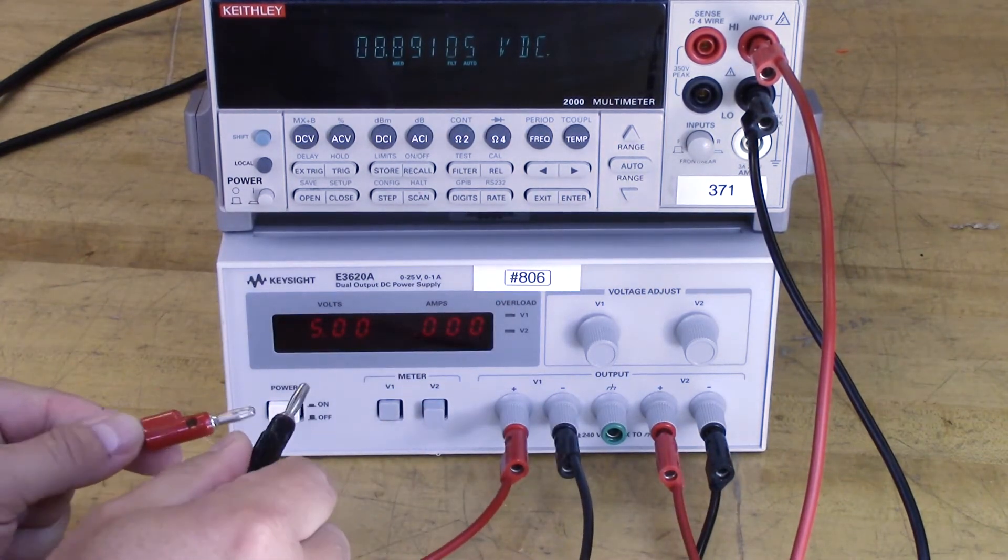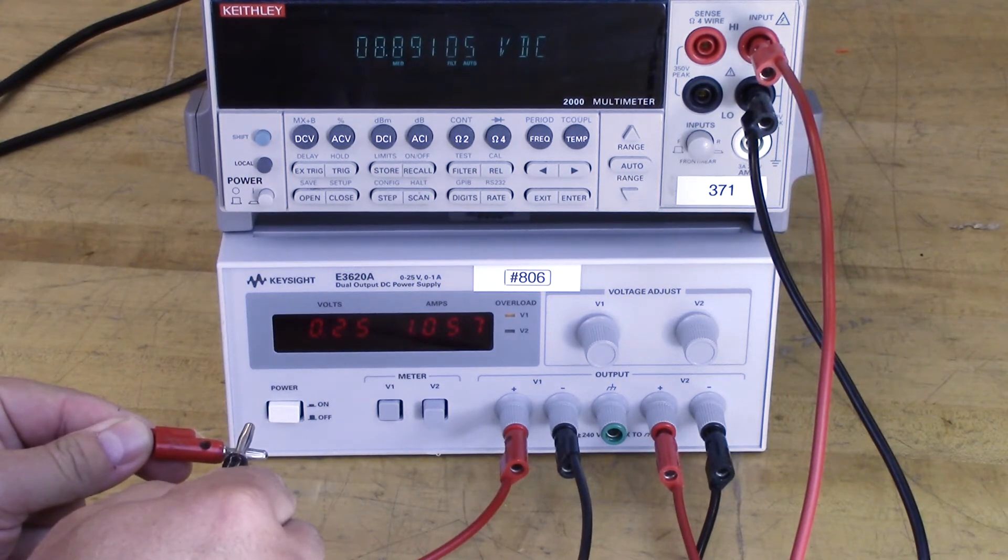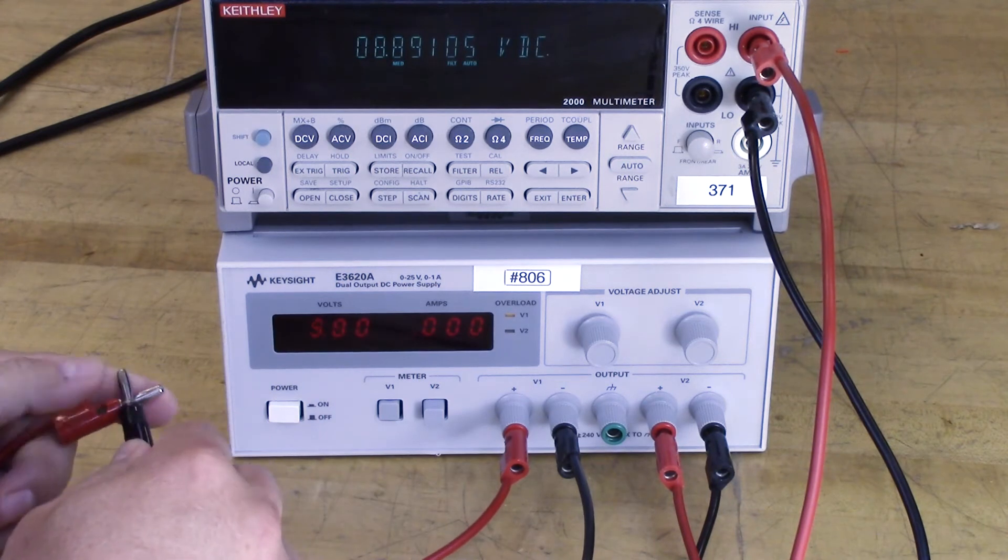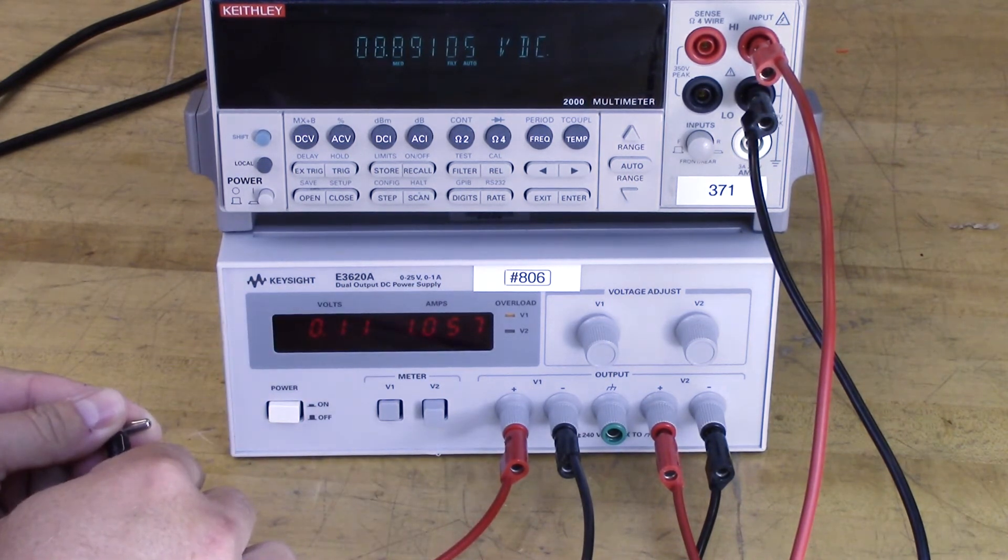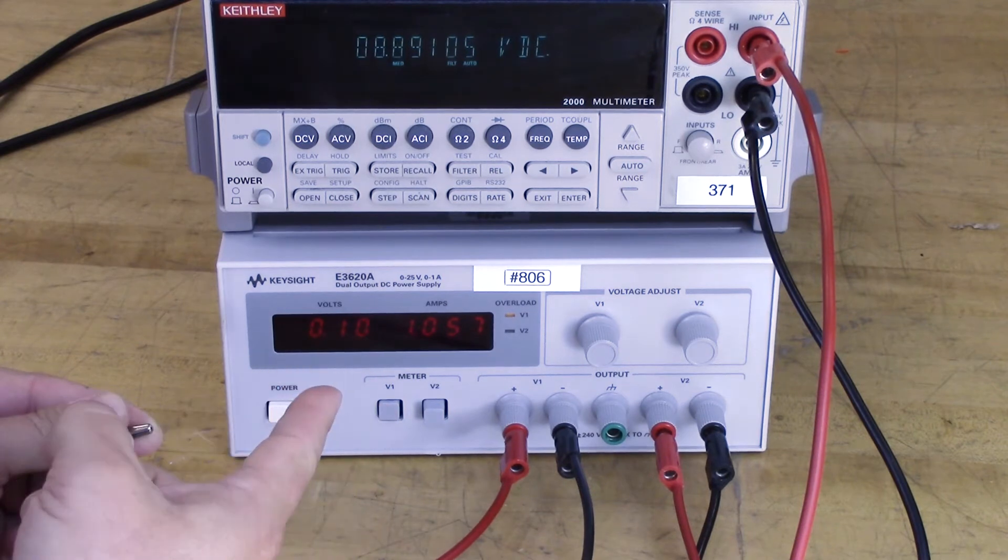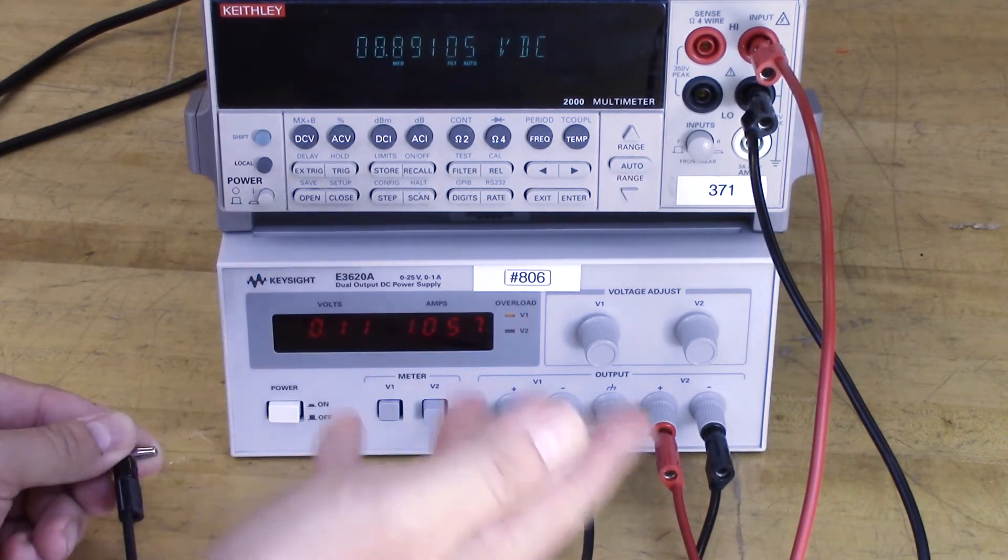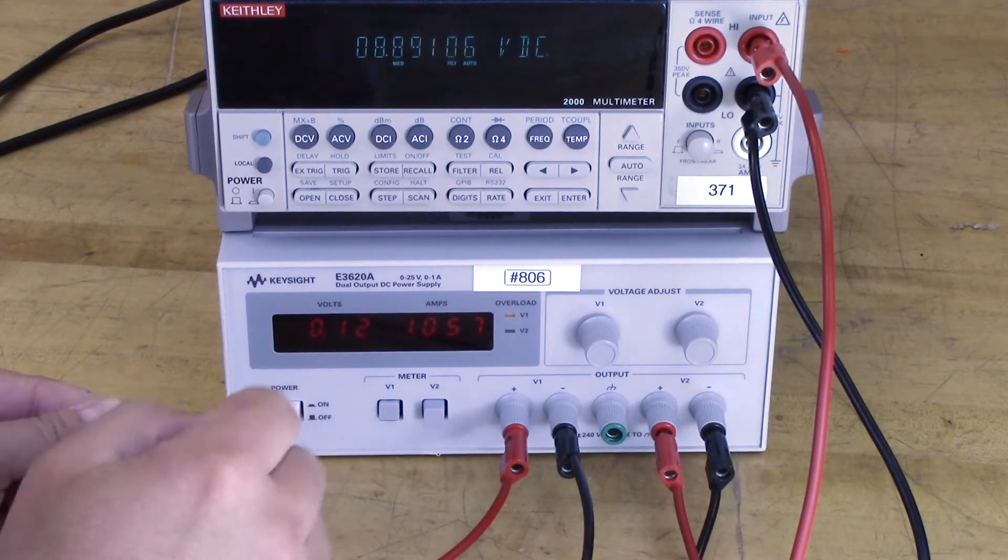So I can actually take these, connect them together, and you can see the voltage drops to about nothing, but the current goes all the way up. So this power supply has about a max output of one amp. And so it's already exceeding it. It recognizes it as a short circuit and drops the voltage. So if you do short it out, you're not harming the power supply.